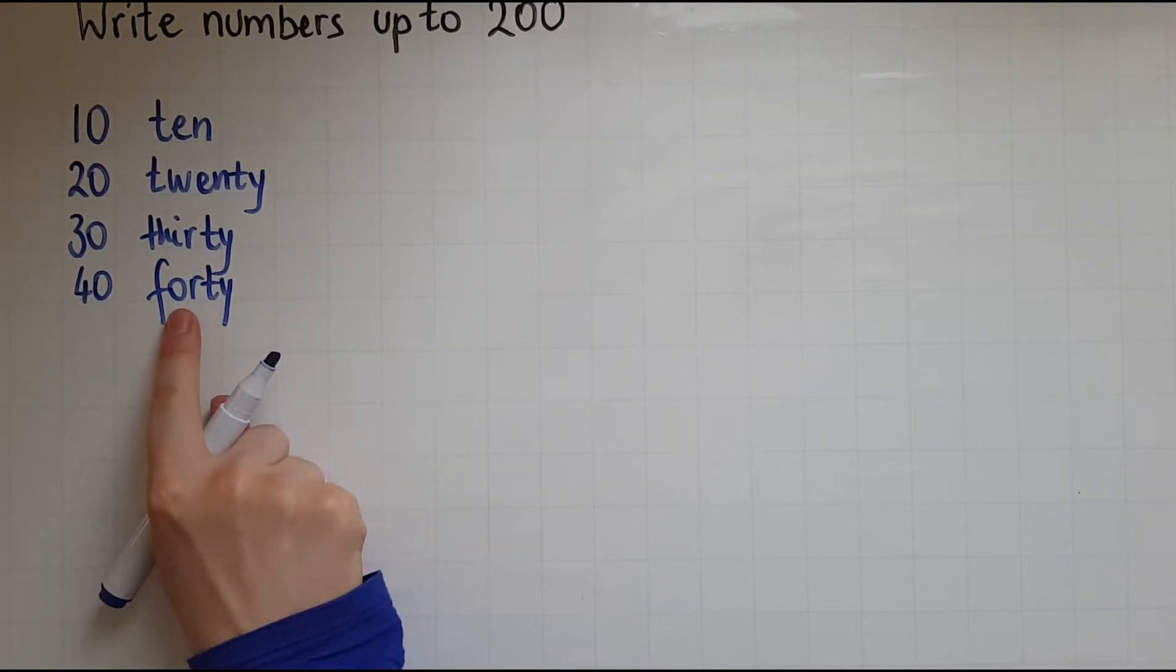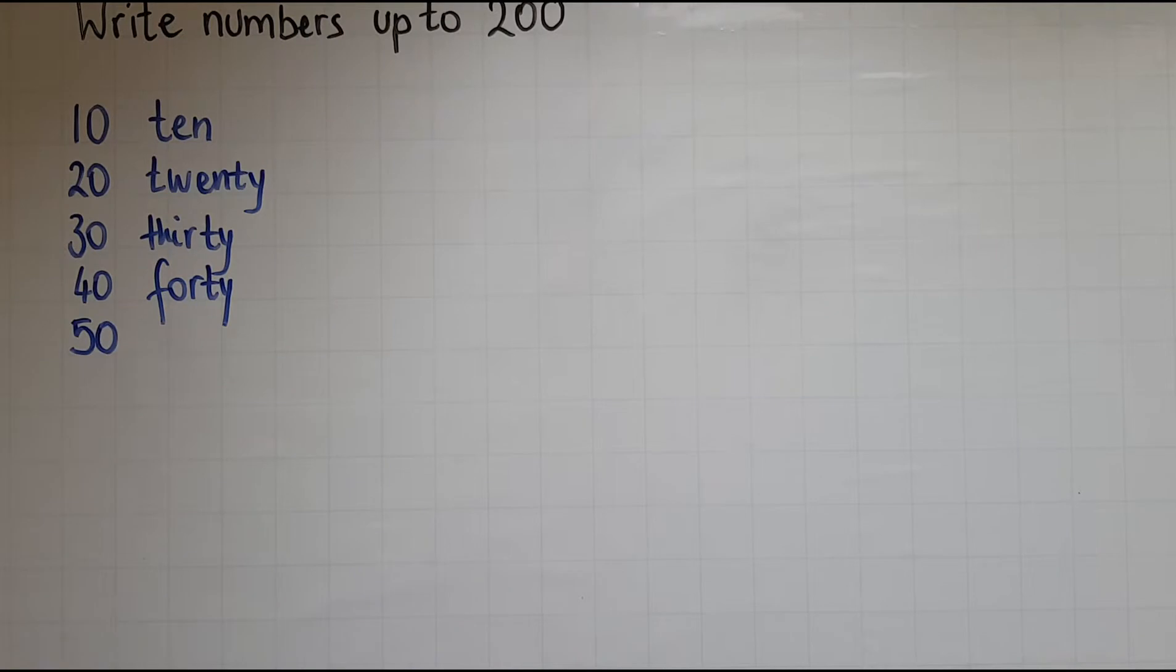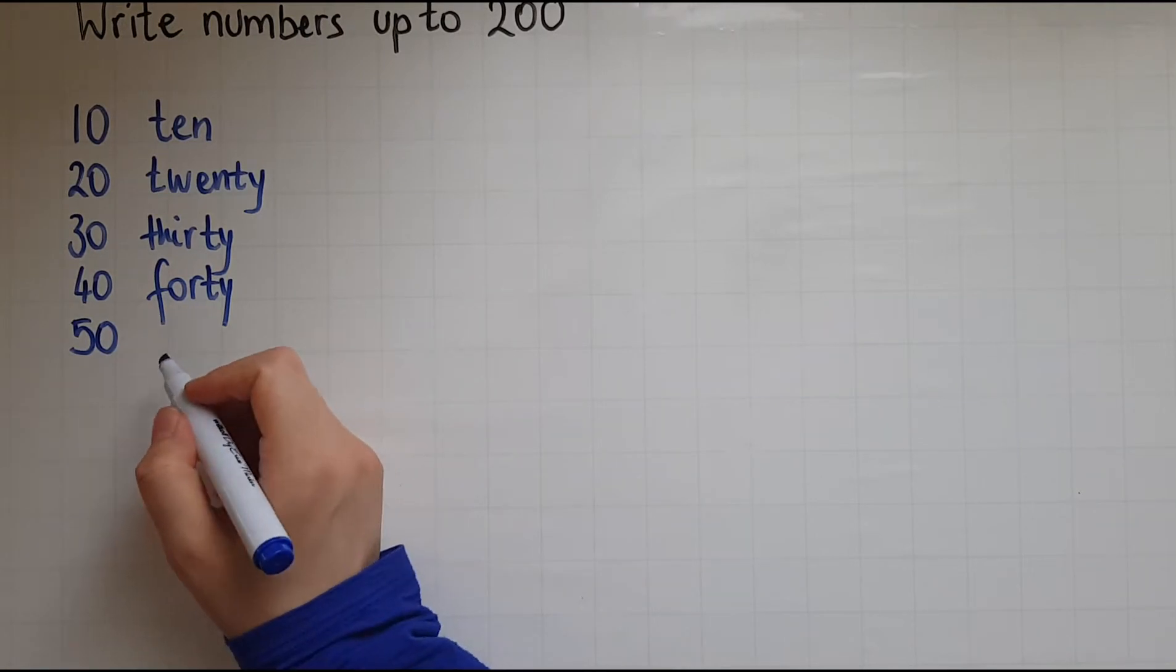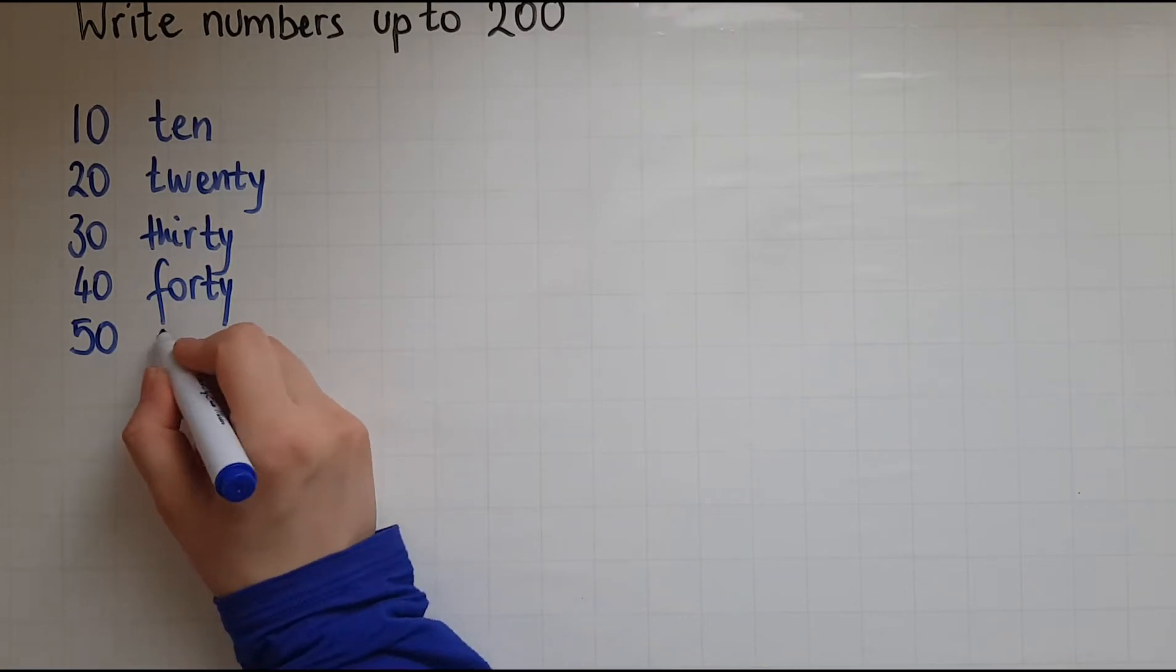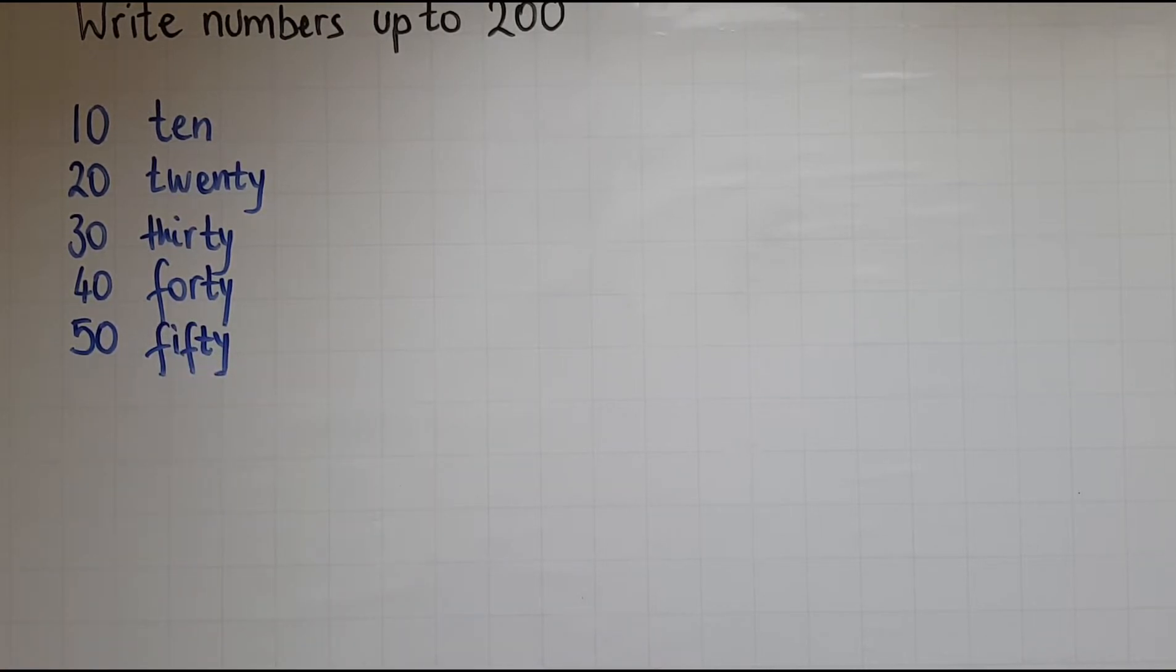So different from 4, which you write as f-o-u-r, you write 40 without a u. 50, again different from 5, you write this as 50 with an f in there.